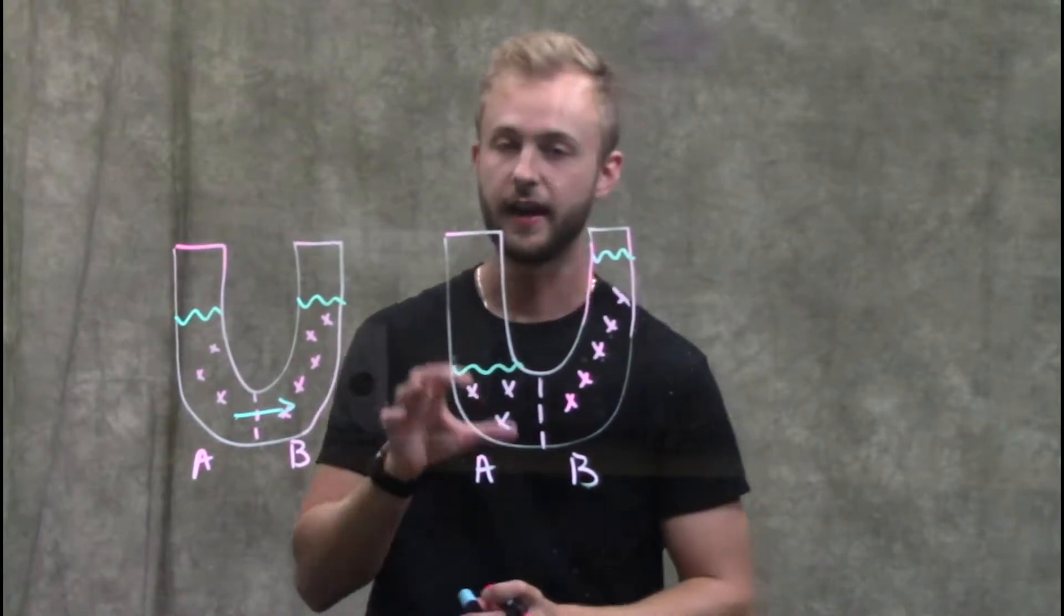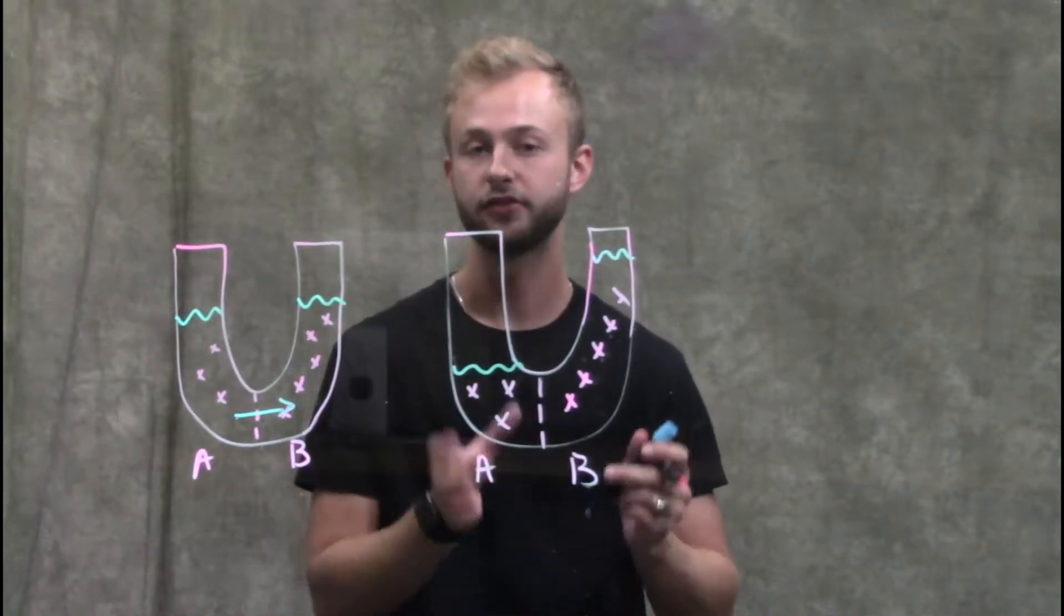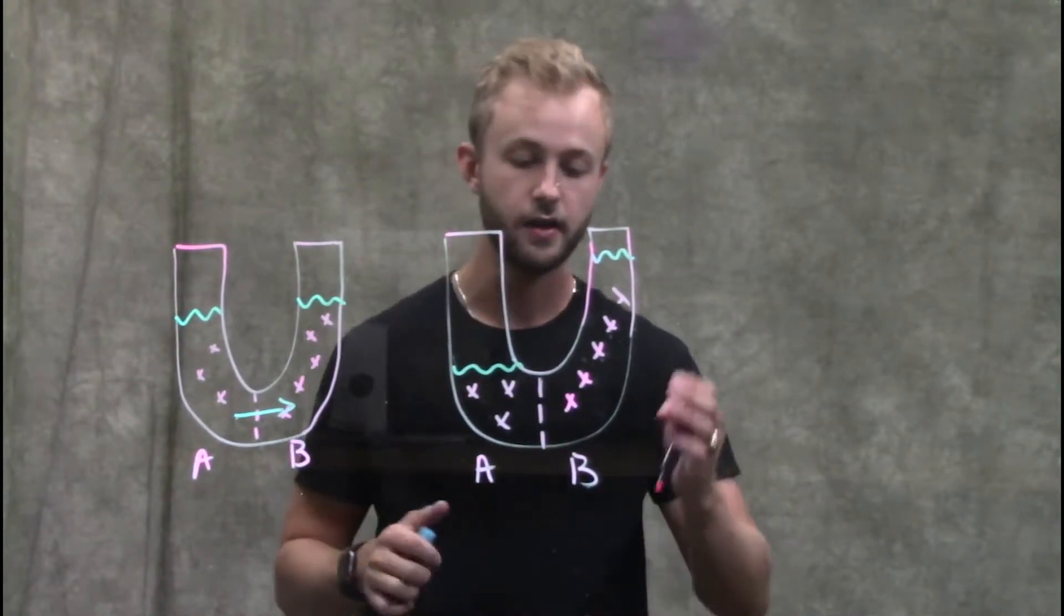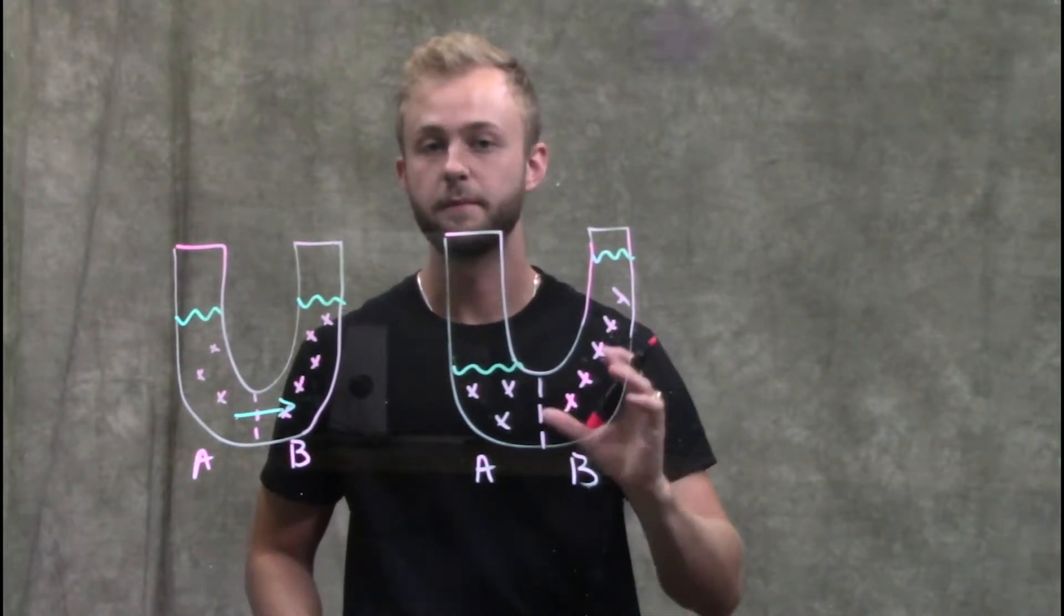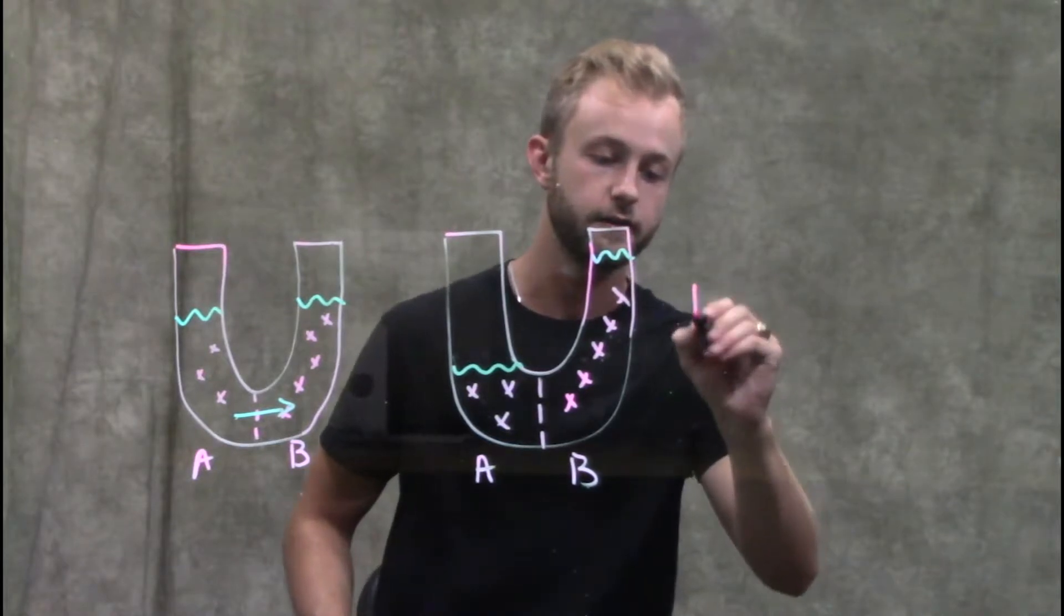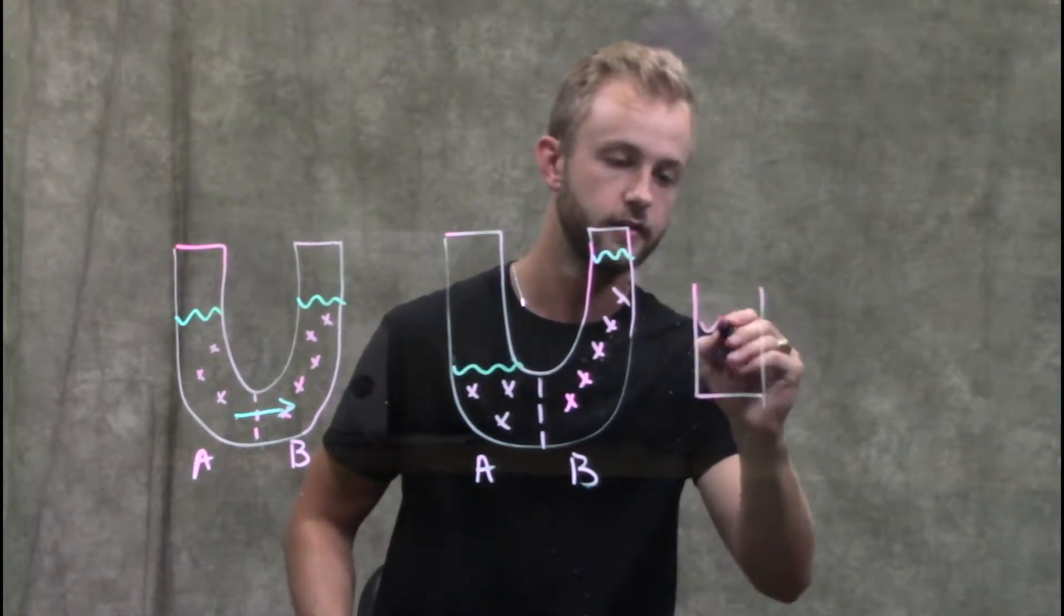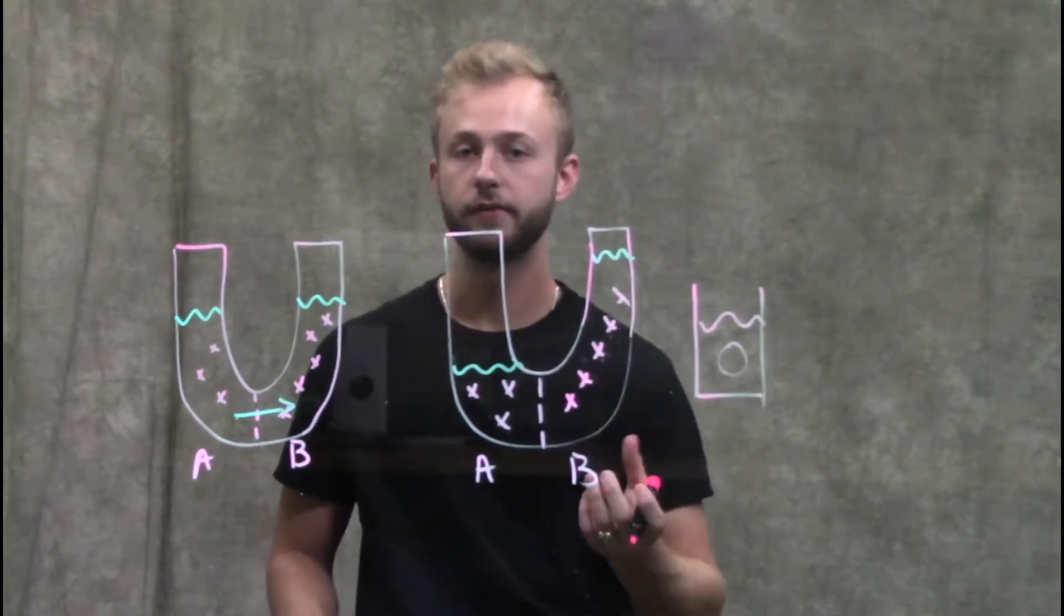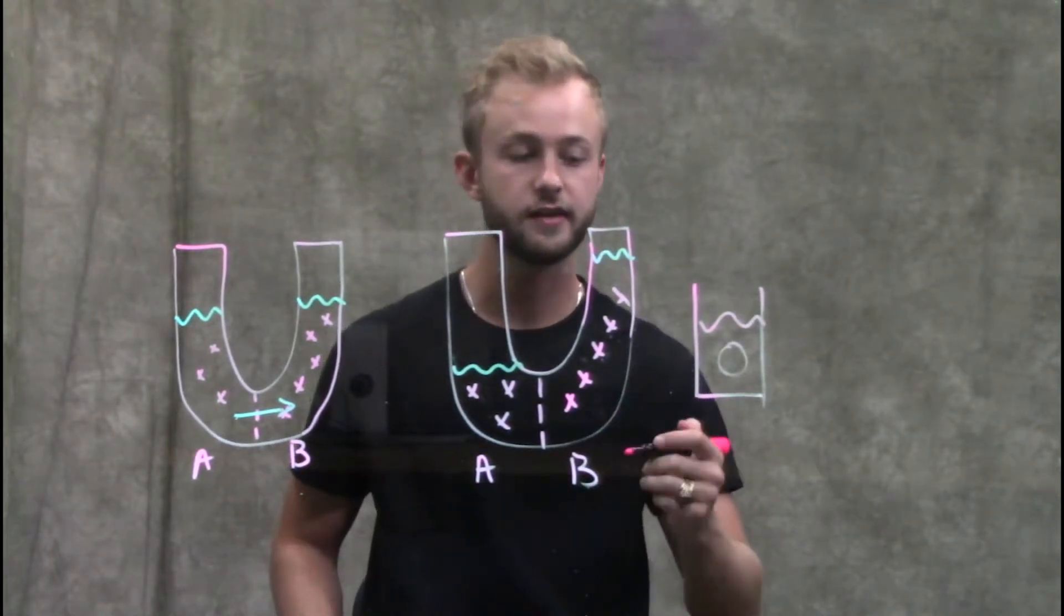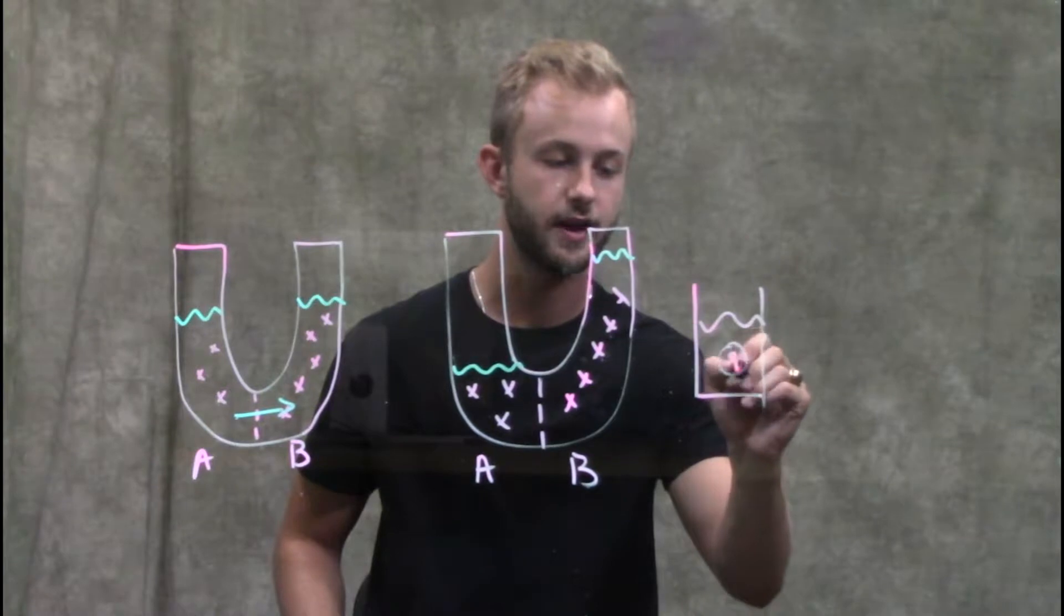Now that we understand how water moves when we have solutes present, we can look at tonicity and some of these comparative terms. If we have this beaker with a red blood cell in it, the solute concentration inside of a red blood cell is 0.9 percent.